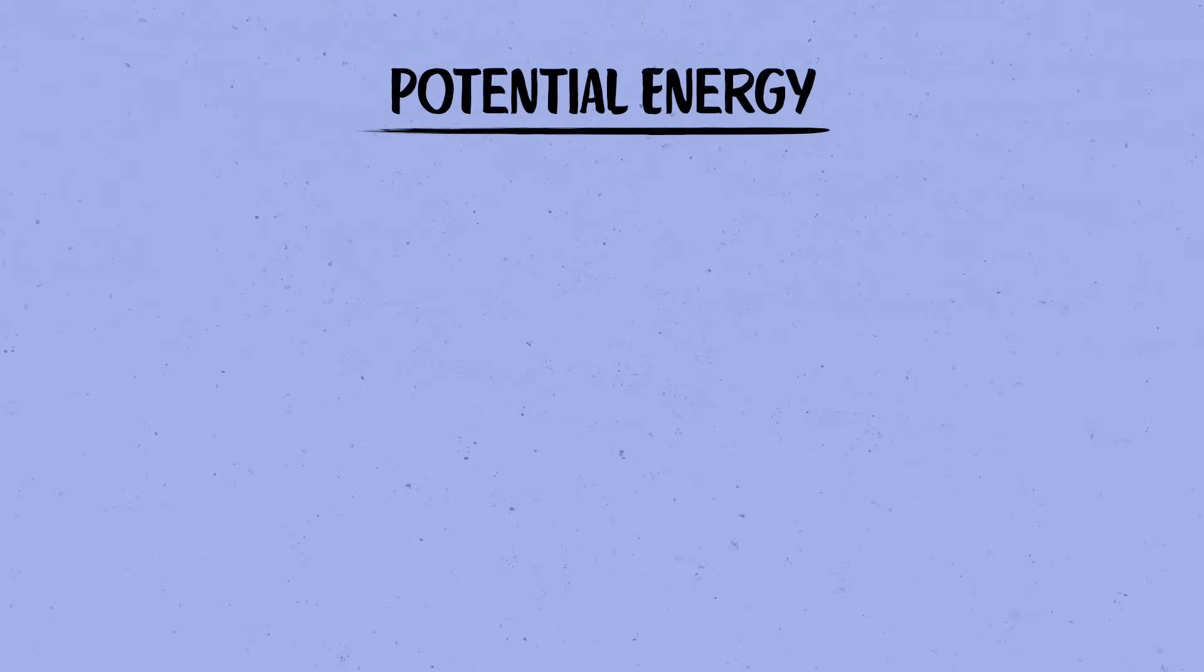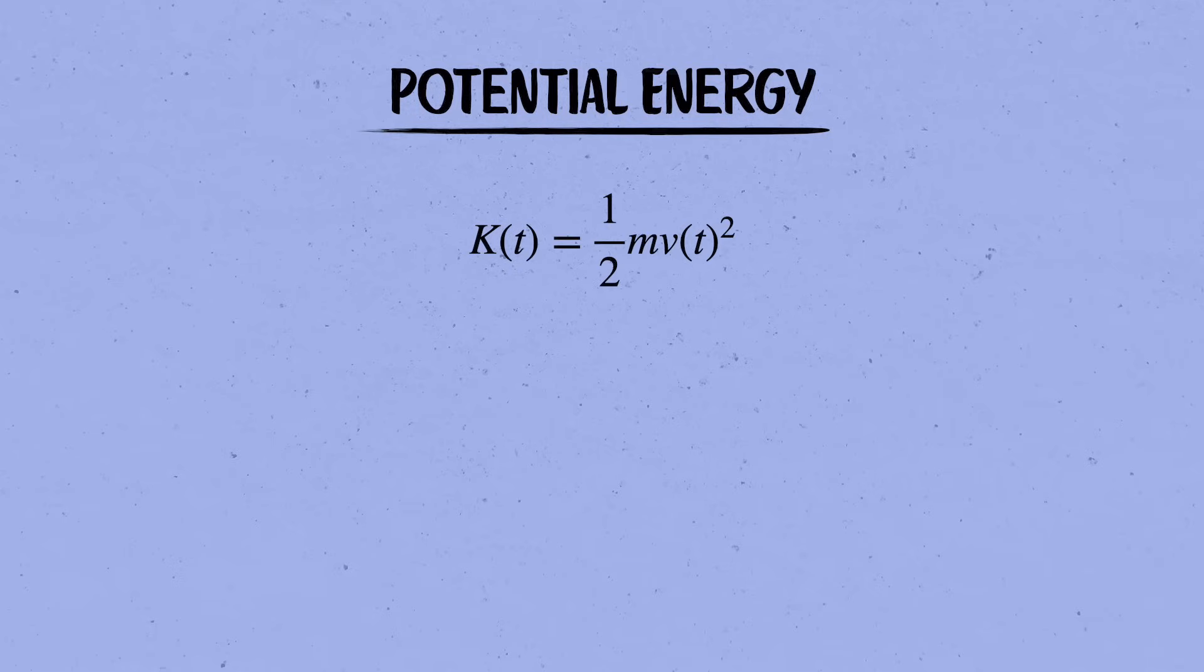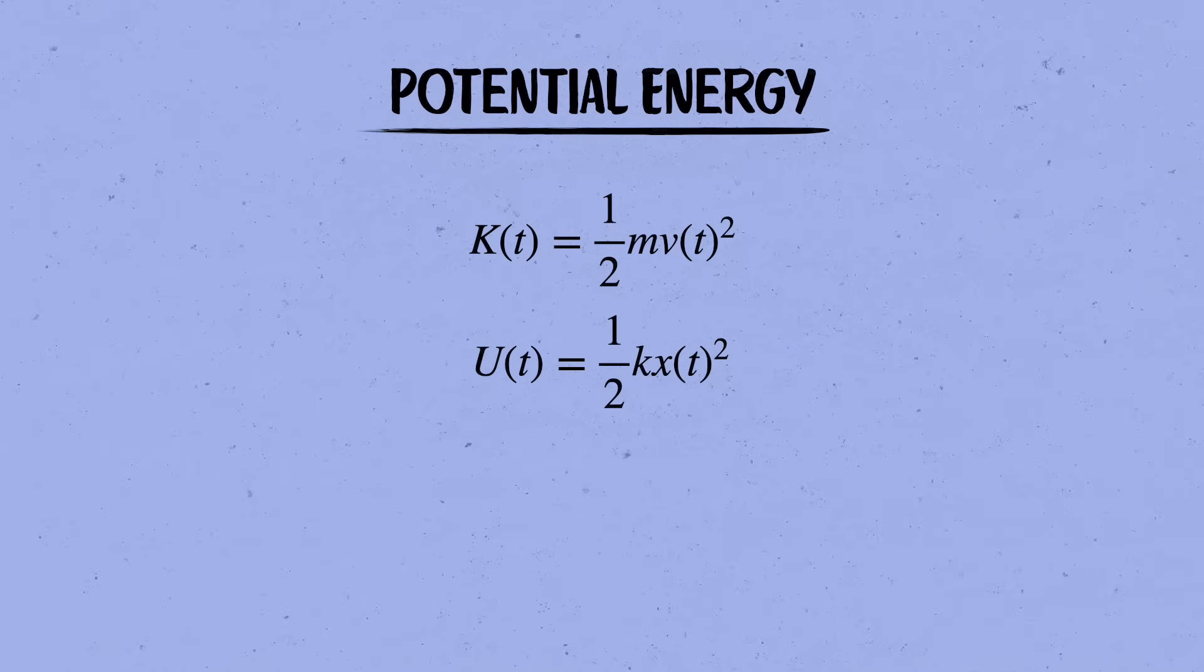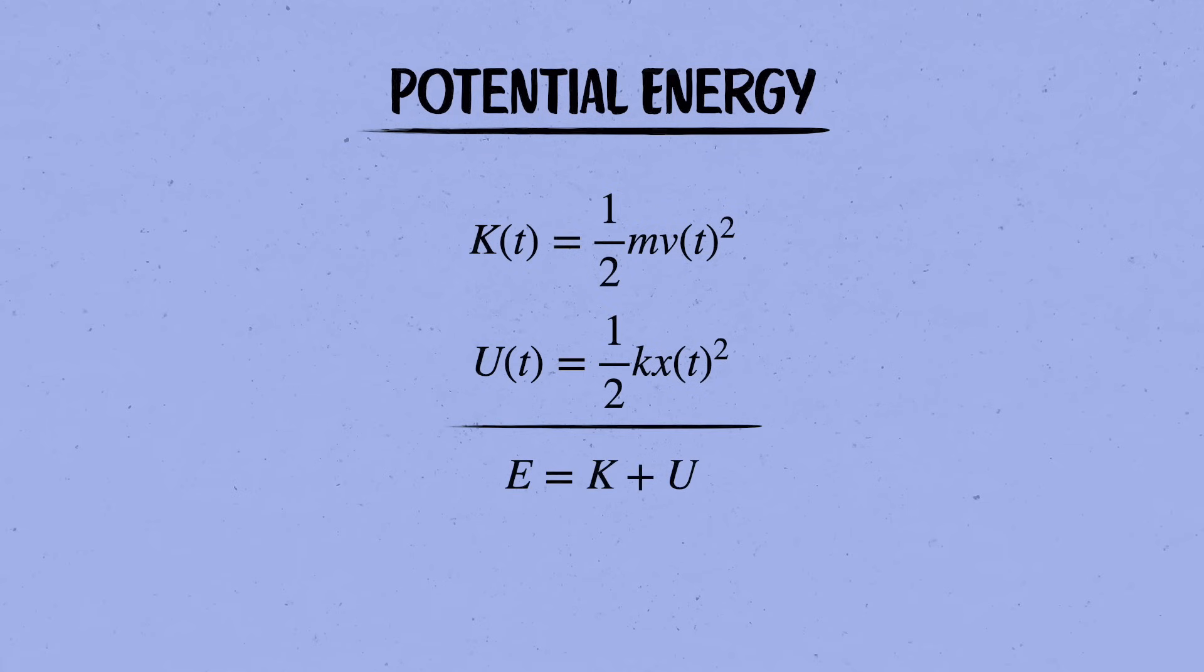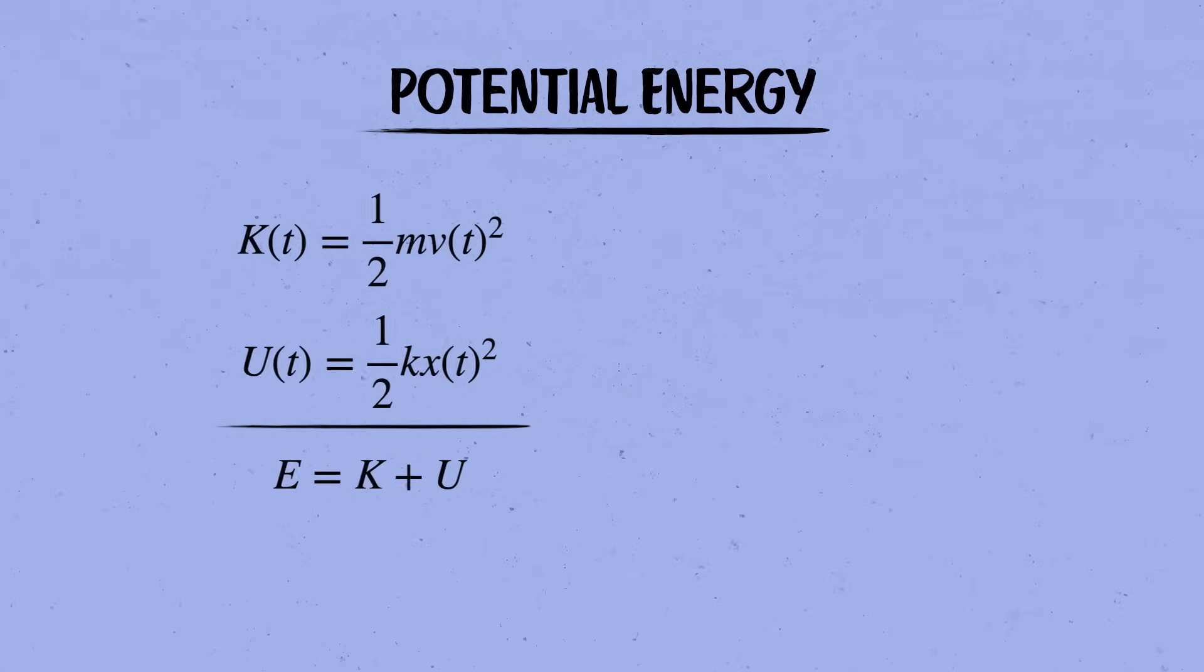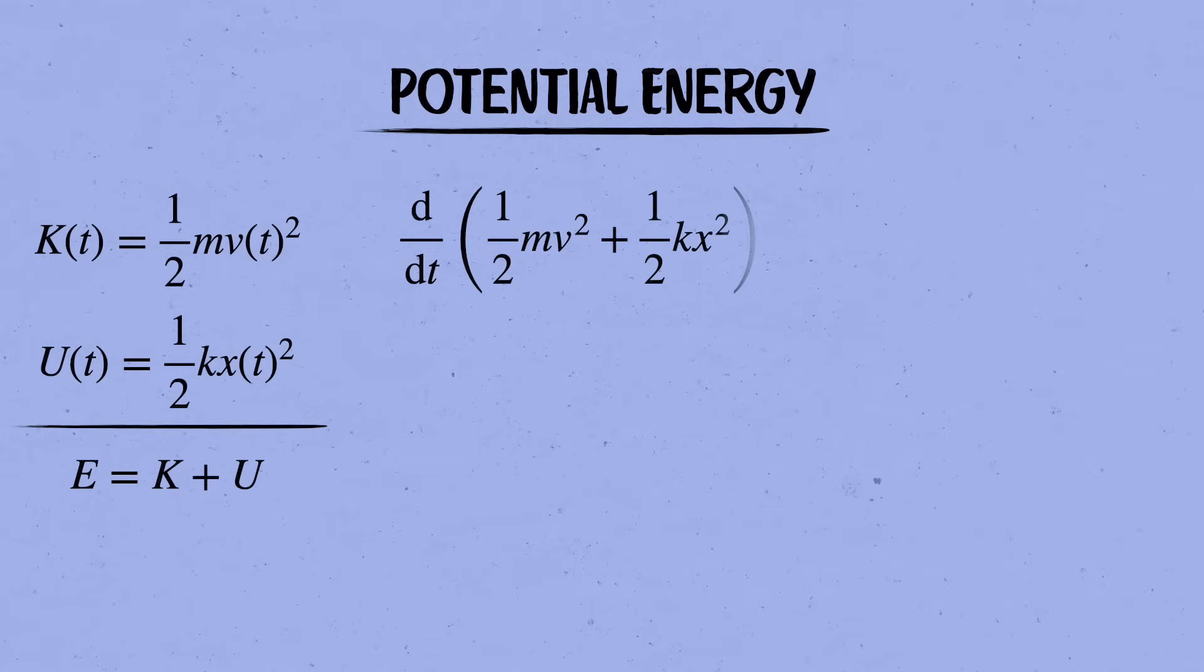There's one more thing we need to review before we can step back and understand why this simple system is so prevalent, and that's the potential energy of the spring. As the block slides back and forth, it's constantly speeding up or slowing down. And so its kinetic energy, k equals one half mv squared, is always changing. But if we add on the potential energy stored in the spring, u equals one half kx squared, then the total energy is a constant.